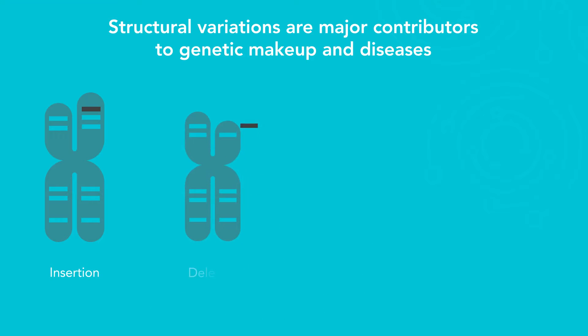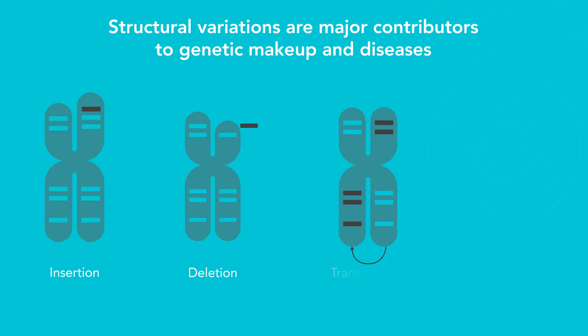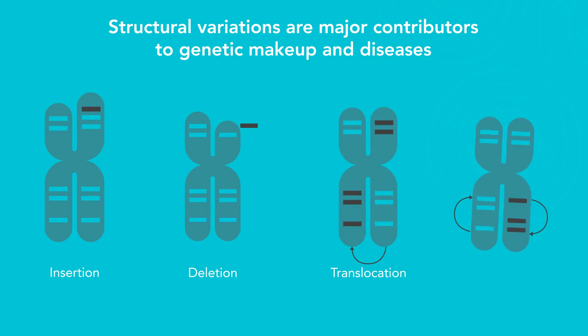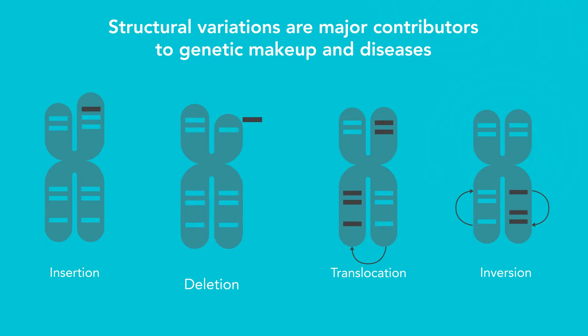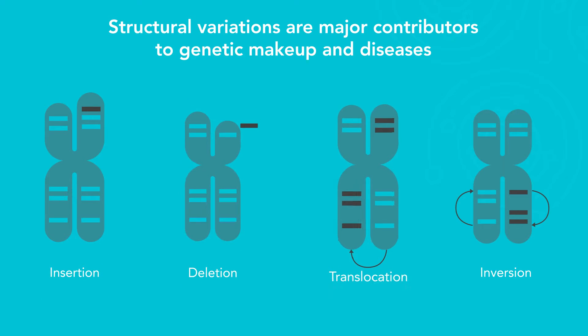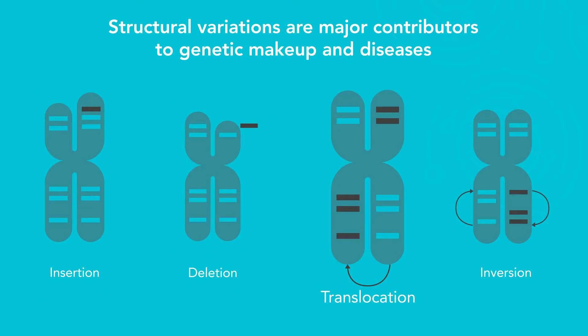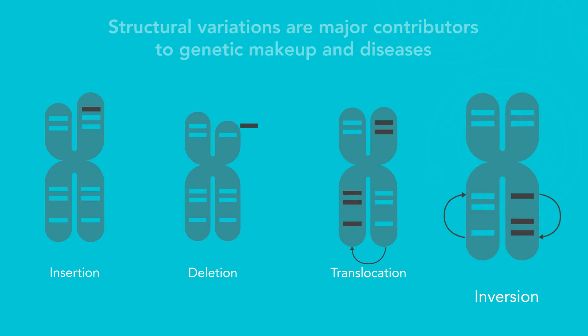Structural variants are classified as genomic changes larger than 50 base pairs and consist of balanced and unbalanced changes including insertions, deletions, translocations, and inversions.